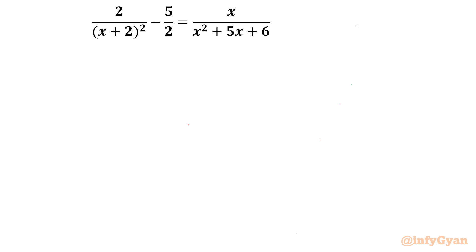Welcome to InfiGam, my dear friends. In this very exciting video of algebraic challenging equations, in this series we will be solving one very interesting rational equation today. The equation is 2 over (x+2)² minus 5 over 2 equals x over x² plus 5x plus 6.